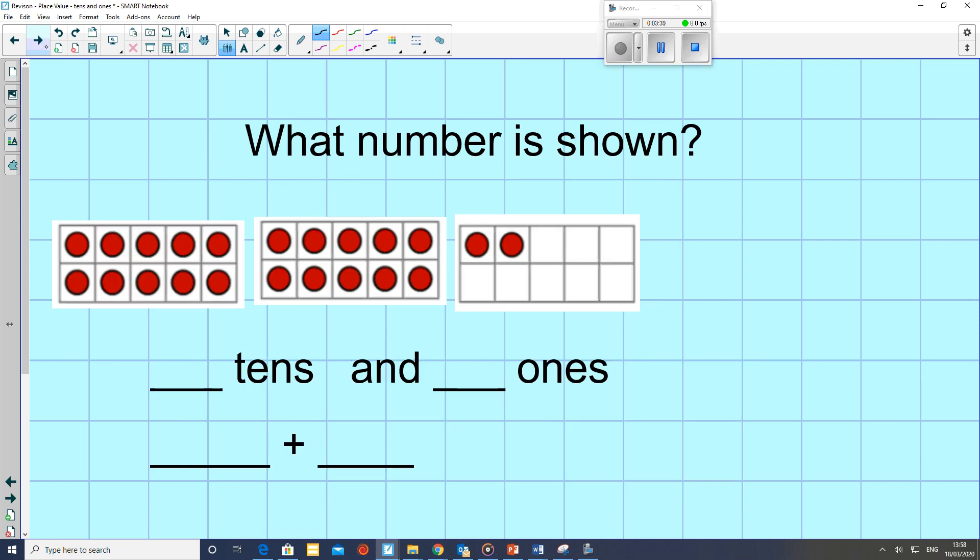Okay. So therefore, as we know that a full 10 frame equals 10, what number is being shown here? Well, we've got 10, and then we have another full frame, which is 10, and then we have 2 ones.